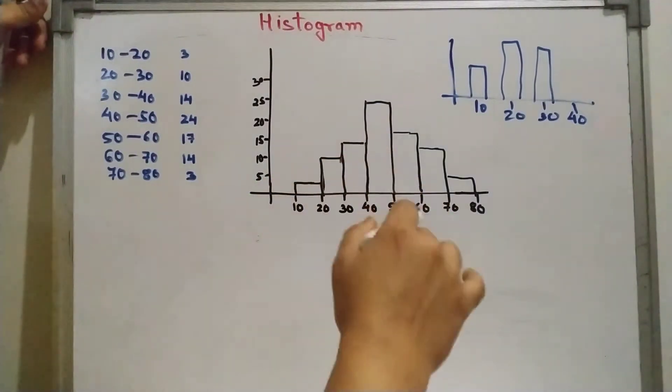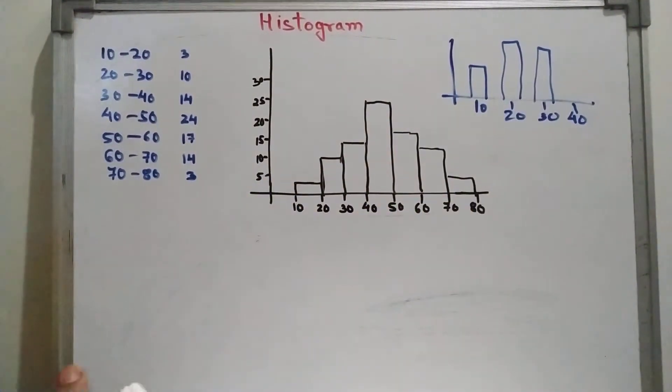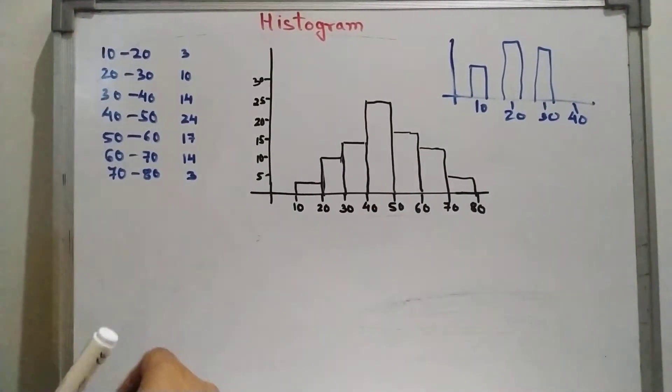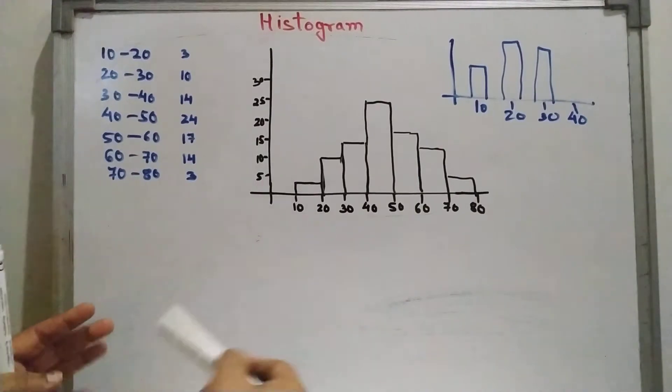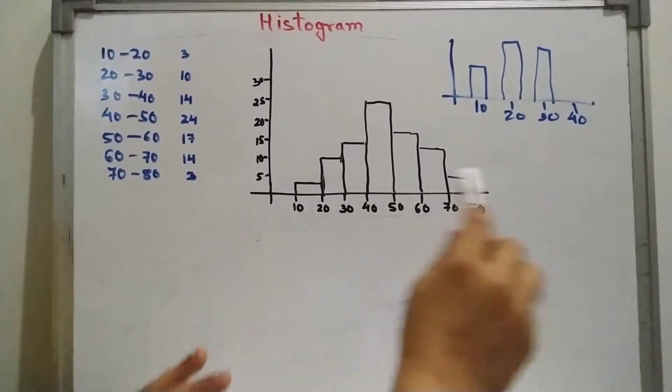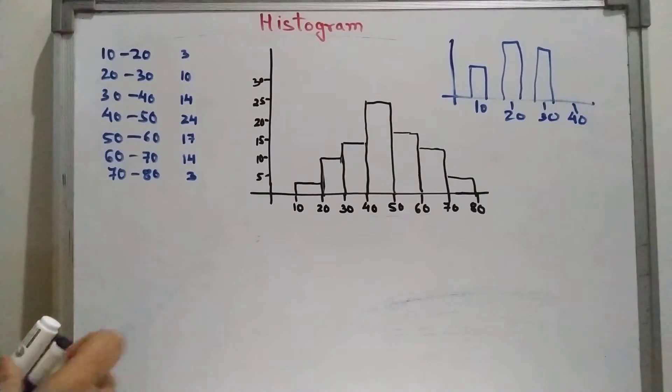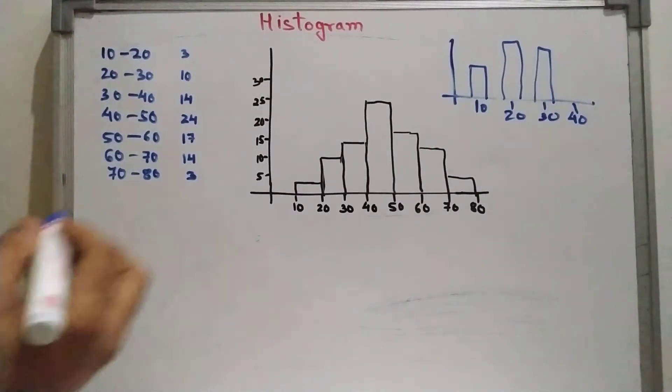There should not be any gap in between the rectangular bars. So the difference between the bar diagram and the histogram is that here there is no gap, but in bar diagram we get gap.